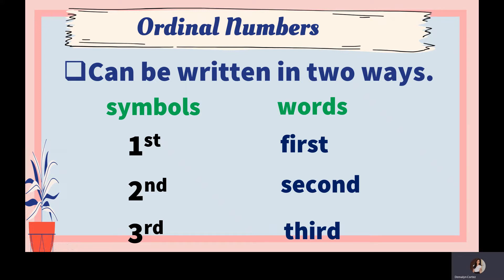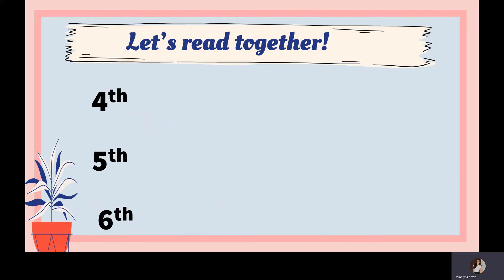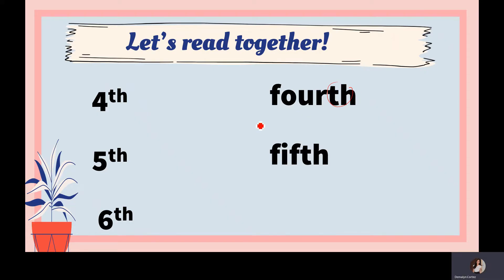Be careful with the spelling of different ordinal numbers. Let's read these together: first, second, third. For 'fourth,' just add TH to four. For 'fifth,' the original spelling is 'five' — remove V-E, change it to F, and add TH. So from 'five' to 'fifth.' That is one of the ordinal numbers that requires a spelling change.